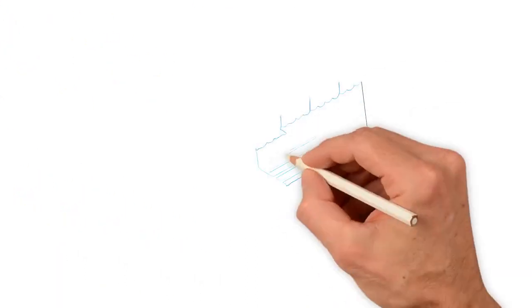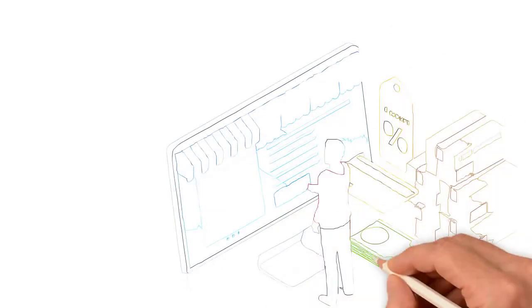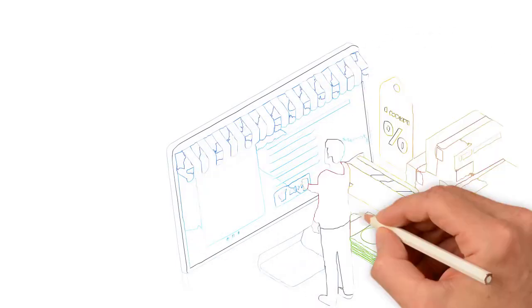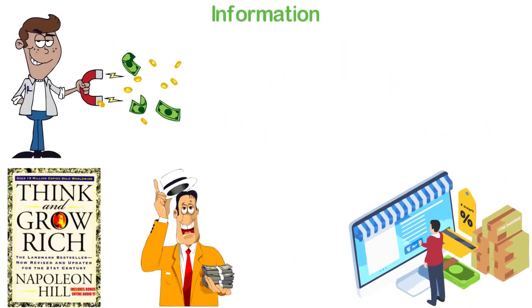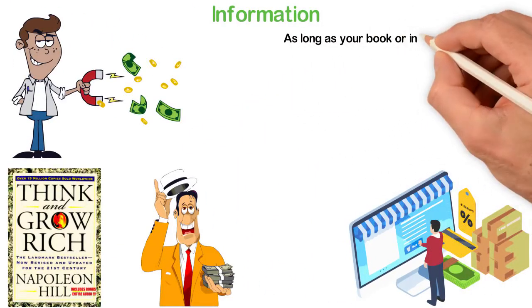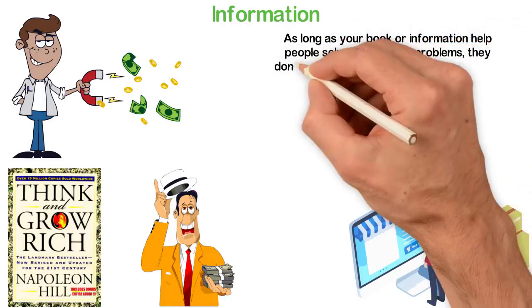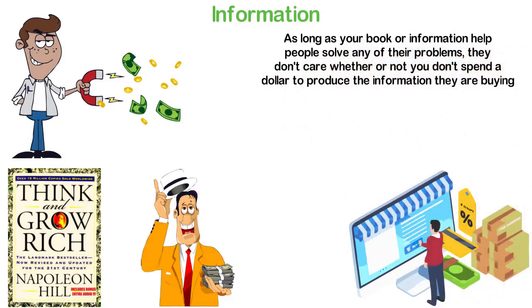For example, I have more than 5 books I've written and selling as you watch this video. Of all these 5 books, I only published one as a hard copy. In fact, I later discovered that people are willing to pay more for the soft copy of my books than for the hard copy. As long as your book or information helps people solve any of their problems, they don't care whether or not you don't spend a dollar to produce the information they are buying.